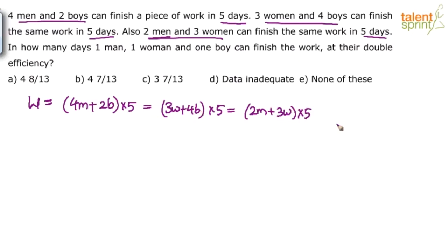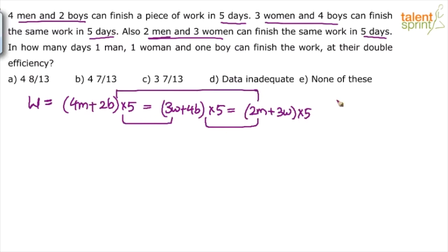So you have 3 equations. From these equations, you can find out the relationship between the capacity of men and women, men and boys, women and boys, and so on. Once you get the capacities, you can find out how much time 1 man, 1 woman and 1 boy would take when working together.